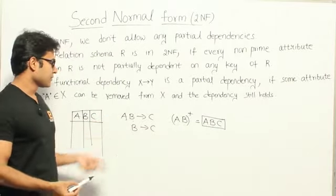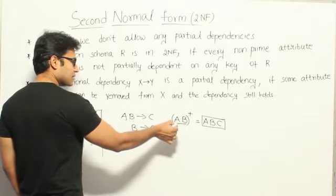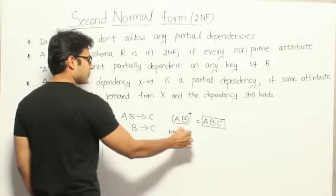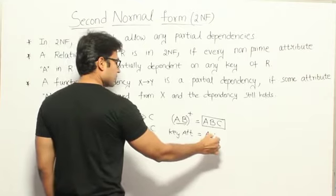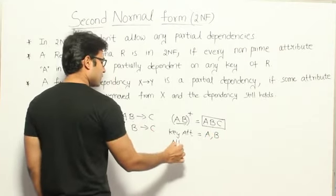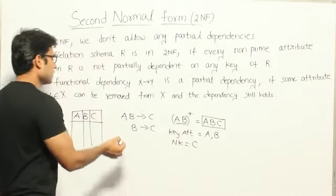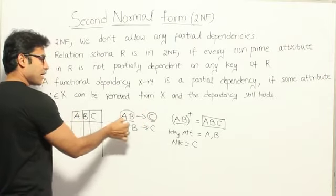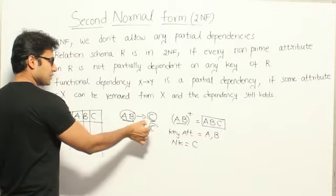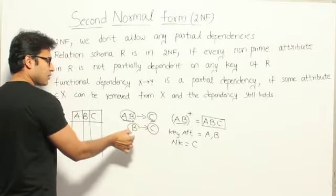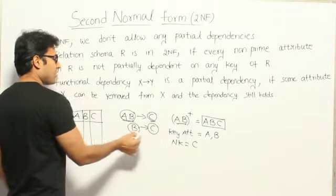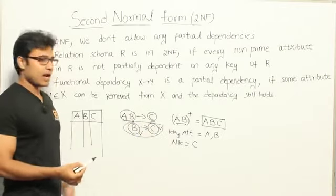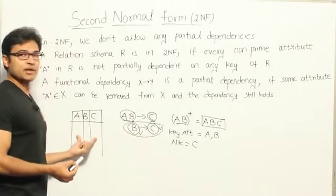Now if you observe these functional dependencies, whenever you find out the candidate key, attributes A and B are called key attributes — also called prime attributes. So A and B are key attributes, and the non-key attribute in this case is only C. Key attributes completely determine C, meaning C is completely dependent on the candidate key. But in the dependency B determines C, C is a non-key attribute depending only on part of the key. Such a dependency is called a partial dependency, and because of this partial dependency, the original table might have some redundancies.